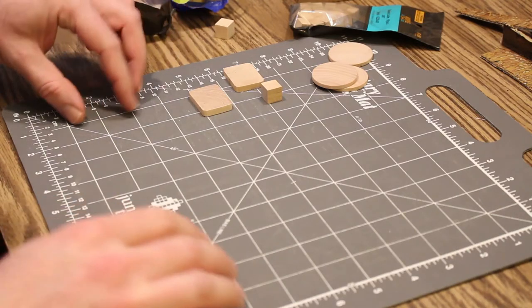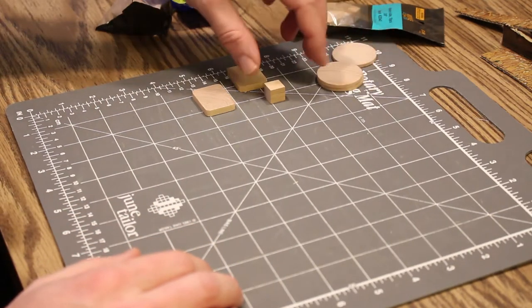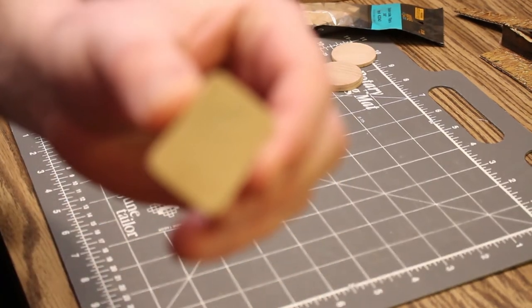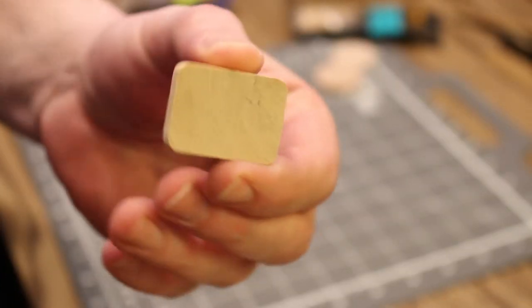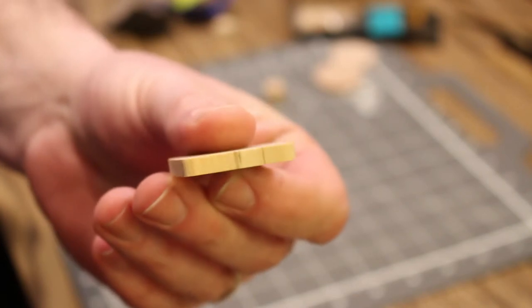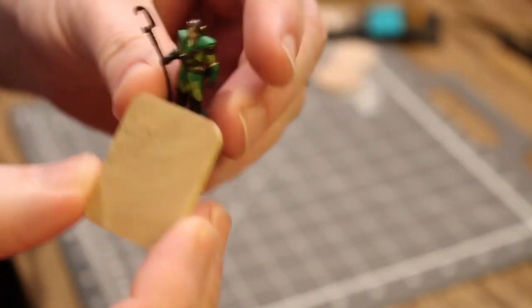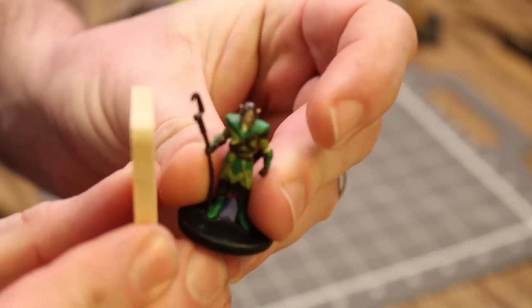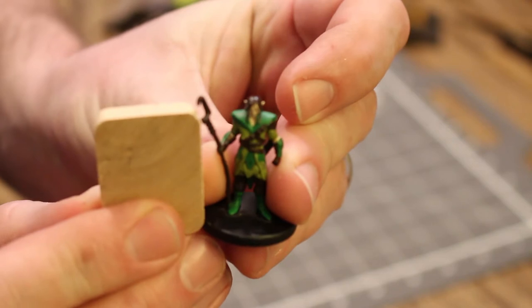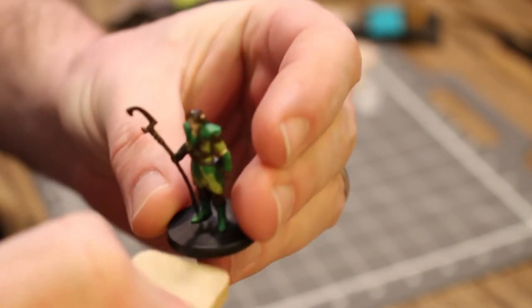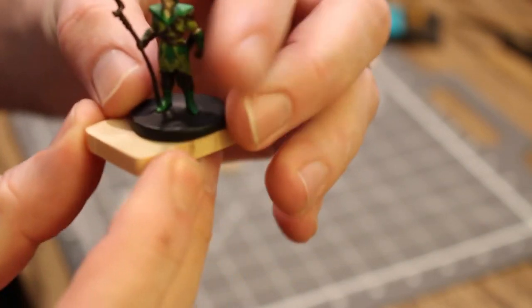Okay crafters, so I picked up a bunch of different little wood odds and ends from Hobby Lobby. Among them I've got this cute little rectangle. It's about yay thick and about that big. Here's a mini for scale. So it's probably the same height as the mini and about big enough for a mini to stand on.